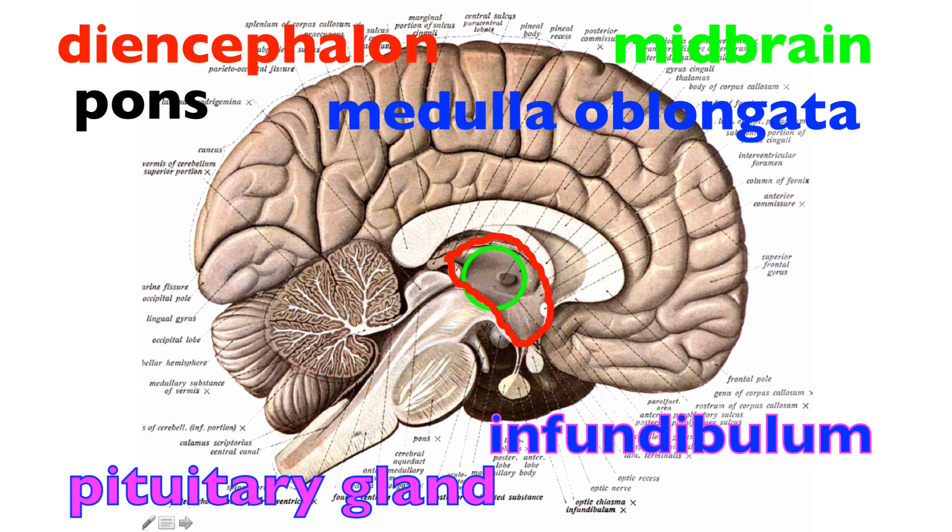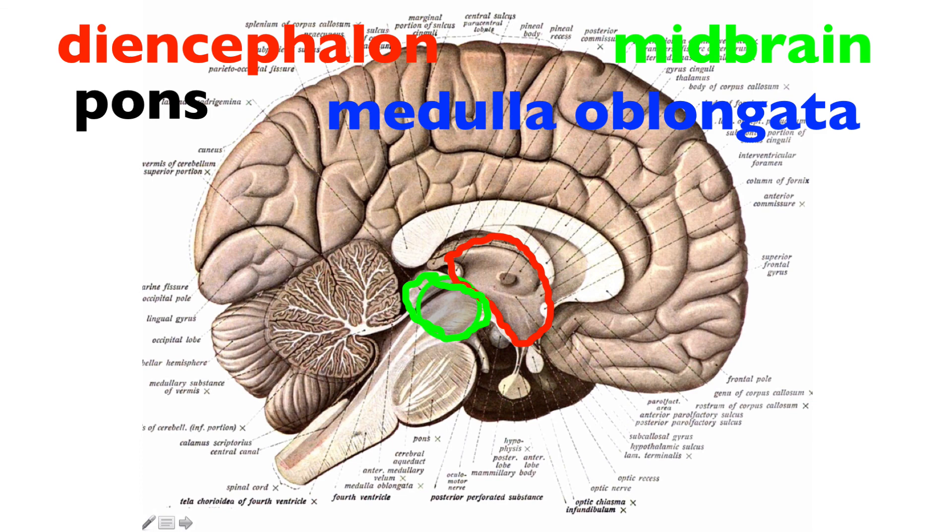The midbrain right here, the pons, and the medulla oblongata. Once again, the most inferior posterior aspect in this image is the spinal cord. So where it starts to taper down, we now refer to that as the spinal cord.